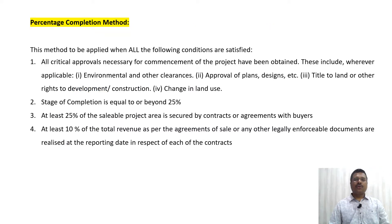As per this guidance note, the percentage of completion method has to be used if the following four criteria are satisfied. First, all critical approvals necessary for commencement of the project have been obtained — meaning all approvals required for execution of the project have been received, including environmental and other clearances, approval of plans and designs, title to land or other rights to development, construction, and change in land use.